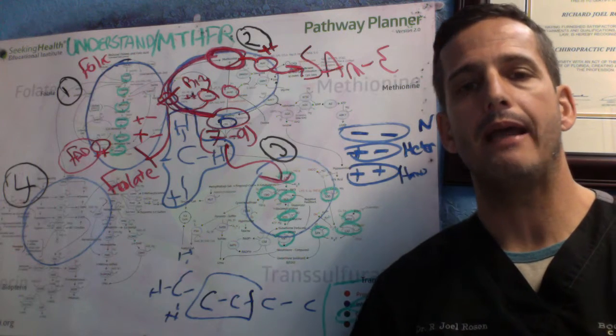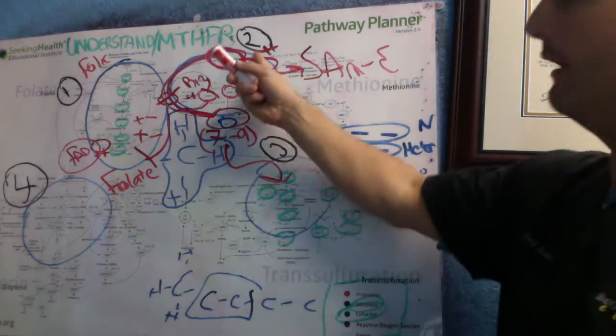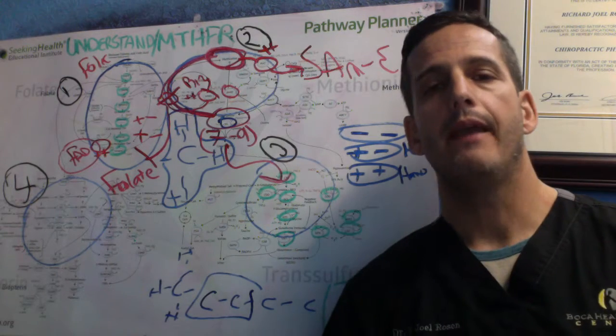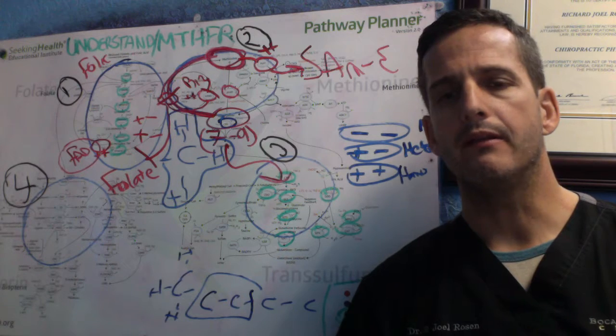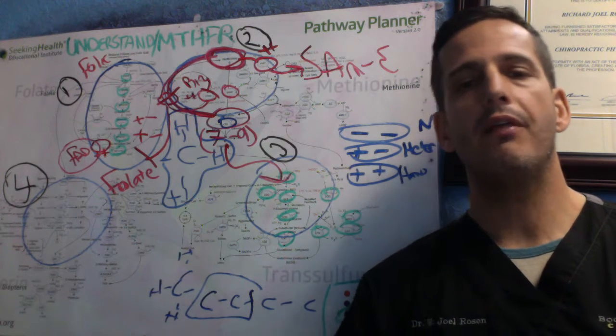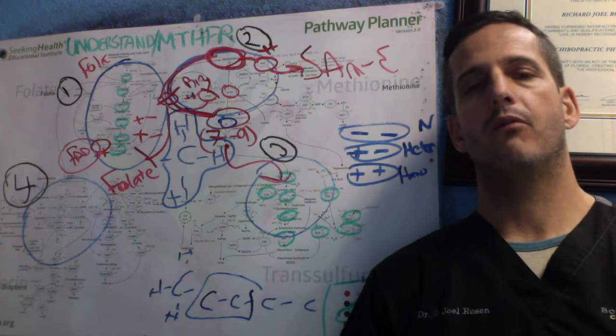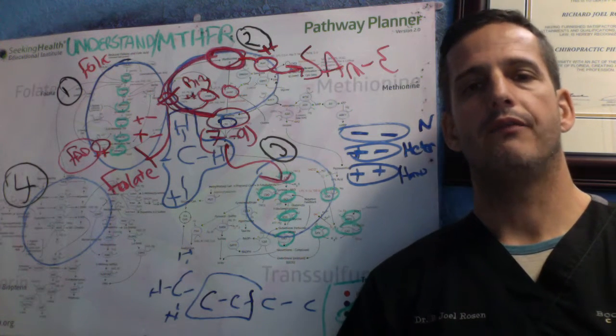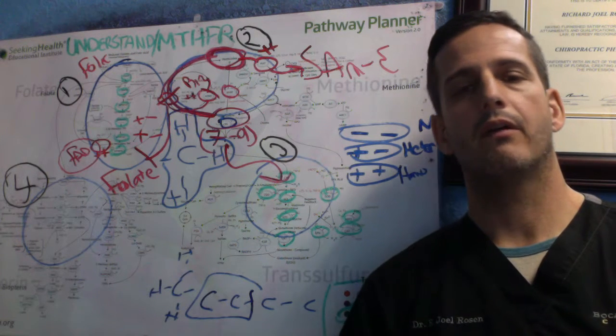But the thing about MAT is it has cofactor deficiencies as well. It requires magnesium and ATP. So a lot of people take magnesium, but ATP, tell me about that, that's a generation of energy. And if this whole methylation cycle is not working properly, then our Krebs cycle is not working properly. Our oxidative phosphorylation is not working properly. Our mitochondria is not working properly.